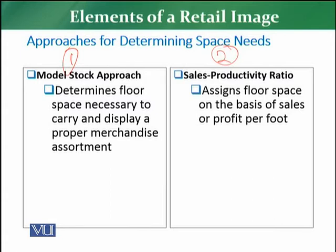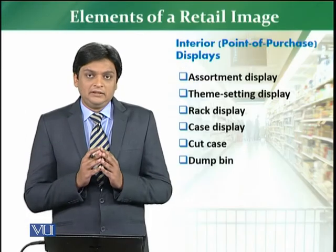The model stock approach determines the floor space necessary to carry and display the proper merchandise assortment. So if you have a stock assortment, you plan the floor space accordingly. The other way is the sales productivity ratio approach: if you have the floor space in a store, you calculate the merchandise assortment per square foot profitability or per square foot sales generated, and on that basis you calculate area productivity to decide how to allocate floor space.